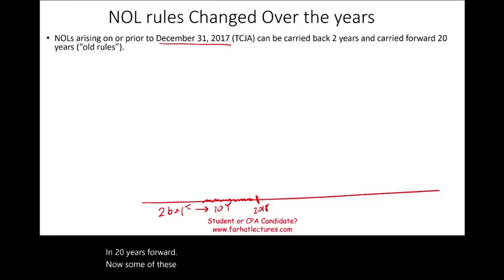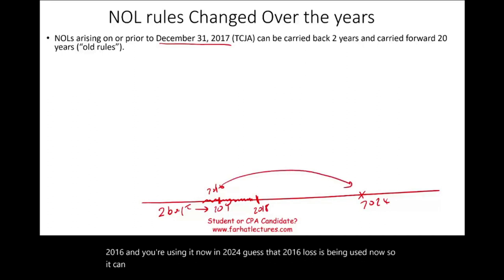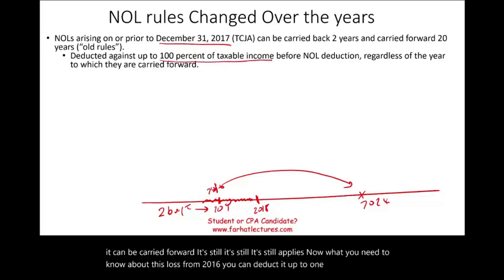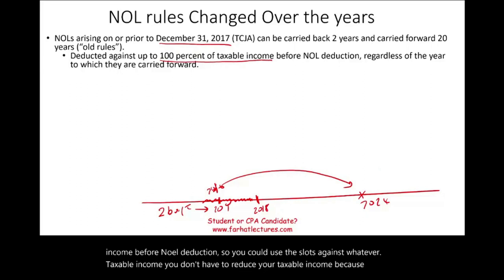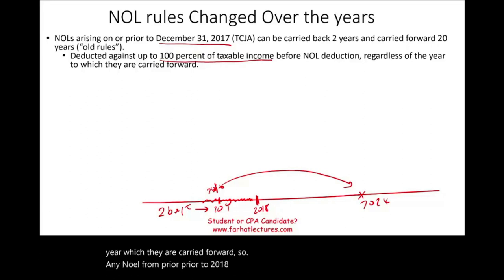Some of these rules still apply — for example, if you have a loss generated in 2016 and you're using it now in 2024, that 2016 loss is still being carried forward. What you need to know about pre-2018 losses is that you can deduct them up to 100% of taxable income before the NOL deduction, regardless of the year to which they are carried forward.